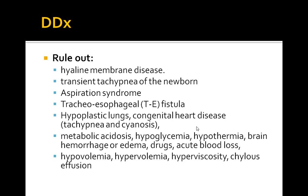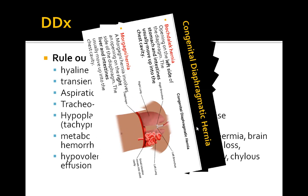You want to rule out TE fistulas by passing a nasogastric tube, hypoplastic lung, and congenital heart disease. Other considerations include metabolic acidosis, hypoglycemia, hypothermia, and hypovolemia. When you get your imaging studies, it will help you narrow down your differential.